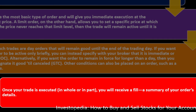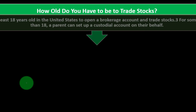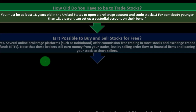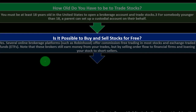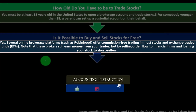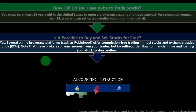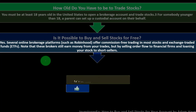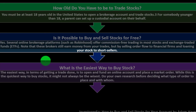Once your trade is executed in whole or in part, you will receive a fill — a summary of your order's details. How old do you have to be to trade stocks? You must be at least 18 years old in the United States to open a brokerage account and trade stocks. For someone younger than 18, a parent can set up a custodial account on their behalf. Is it possible to buy and sell stocks for free? Yes — several online brokerage platforms such as Robinhood offer commission-free trading in most stocks and ETFs. Note that these brokers still earn money by selling order flow to financial firms and loaning your stock to short sellers.